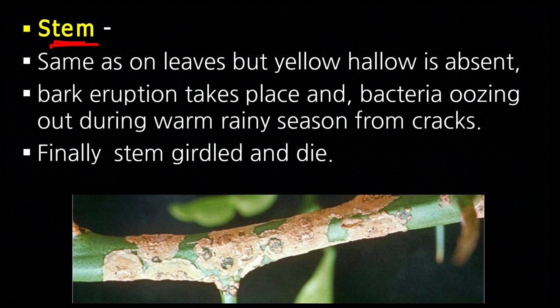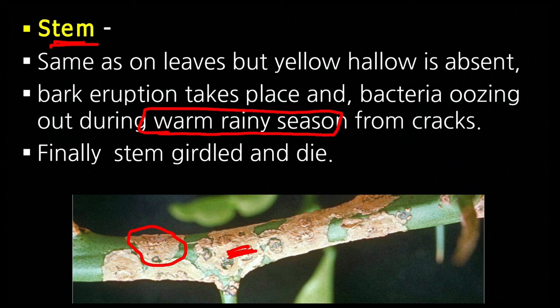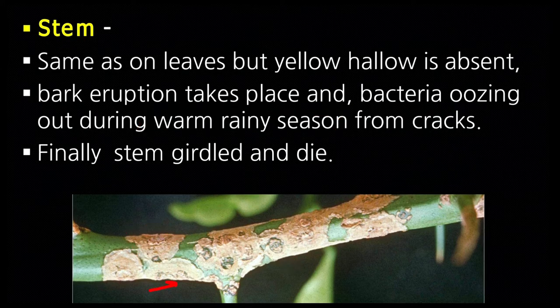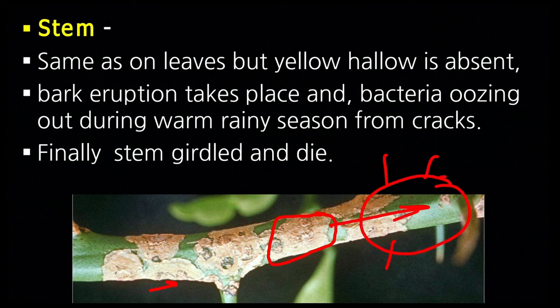In stems, the same type of symptoms appear but the yellow halo is absent — the area around the spots does not turn yellow. Later, cracking occurs and bacteria emerge from these cracks during warm and rainy seasons, when bacterial cells come out from the cracks. Finally the stem is girdled — the spots surround the entire stem and the upper portion with leaves dies.